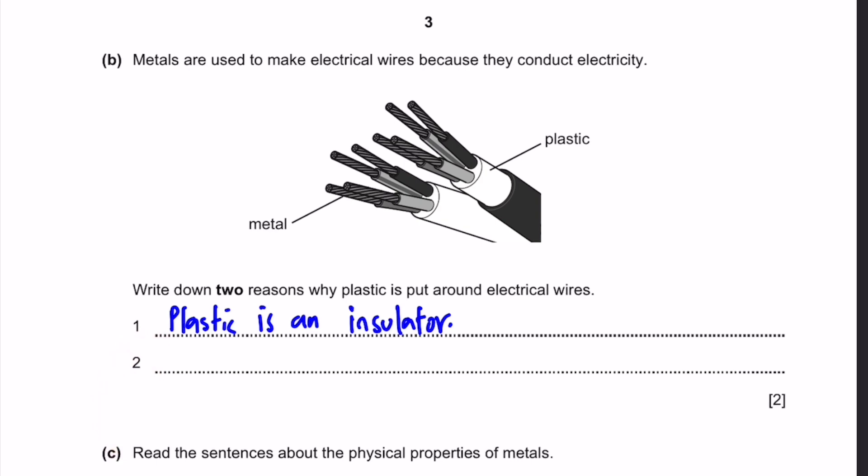This is used for protecting our body. Now for the second reason, it makes these wires like safety handle and safety use because we won't get any shocks or anything. It's similar to the previous point, but it's possible to write. So we won't get electric shocks or it is safe to use.